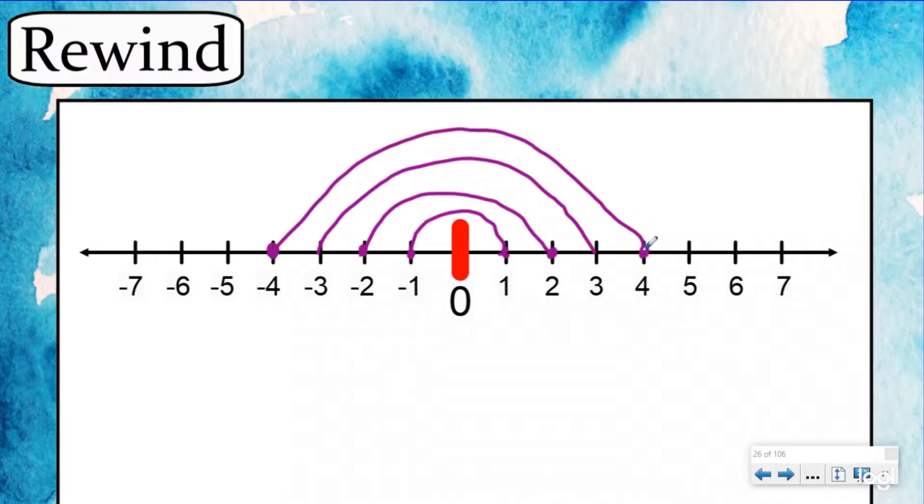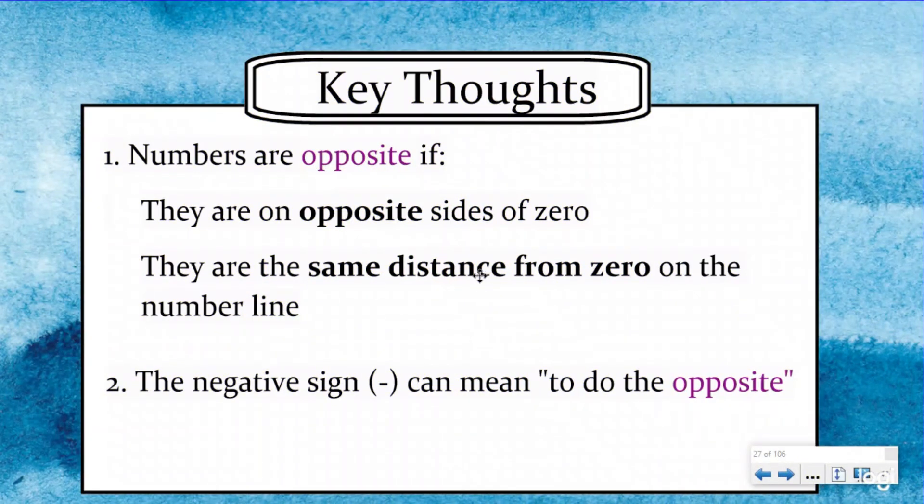And even if you did one million and negative one million, they'd both be on opposite sides of zero. And they'd both be one million units away from zero. So you could consider those opposite. This leads us to our key thought for today's lesson. Key thought number one: Numbers are opposite if they meet these two requirements. They are on opposite sides of zero, and they are the same distance from zero on the number line. We just looked at a couple examples of that.